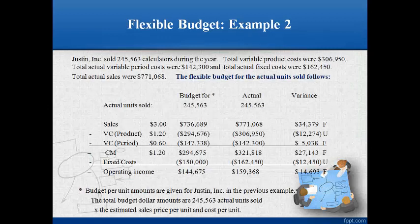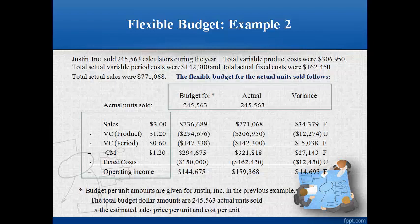The first example demonstrated how to prepare a flexible budget. The second example shows how a flexible budget can be used to analyze what causes operating income to be different than expected for the actual number of units sold. The first step is to set up the variable cost income statement down the left side and state the per unit amounts. The second step is to write the three columns across the top. Next, compute the budgeted cost for the actual 245,563 units sold. Multiply 245,563 by the per unit amounts and compute the contribution margin. Then prepare the actual income statement from the information that is given.